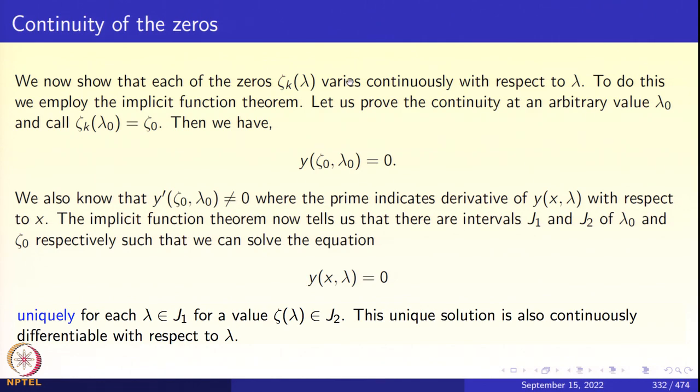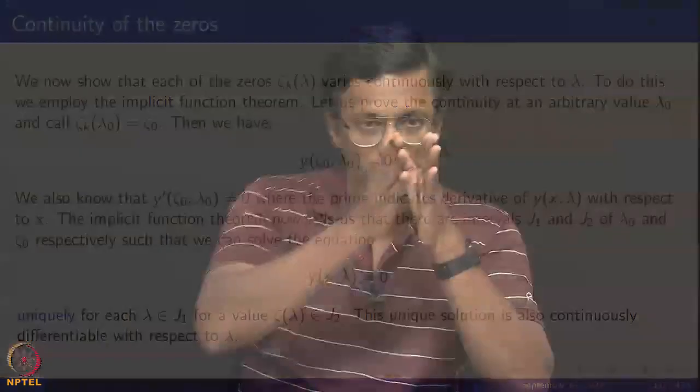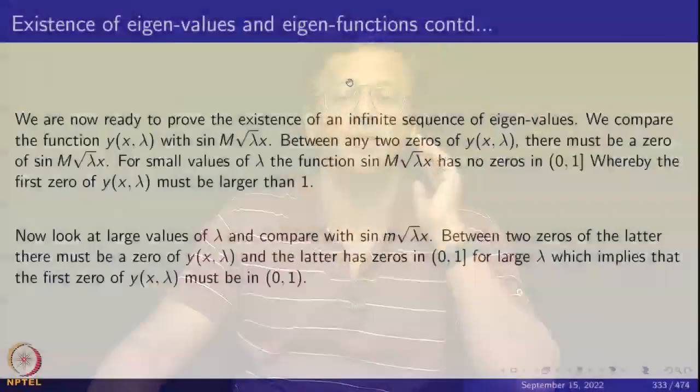The zeros are discrete, so there is a first zero, a second zero, a third zero, and so on. We can arrange the zeros in increasing order — there is an ordering among the zeros. Everything is well defined.